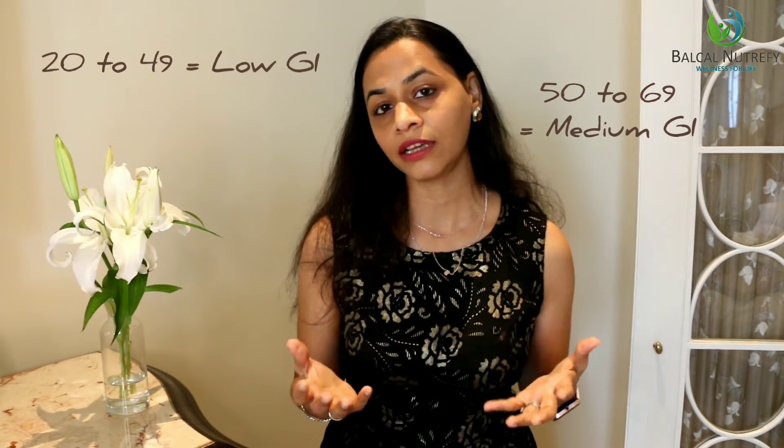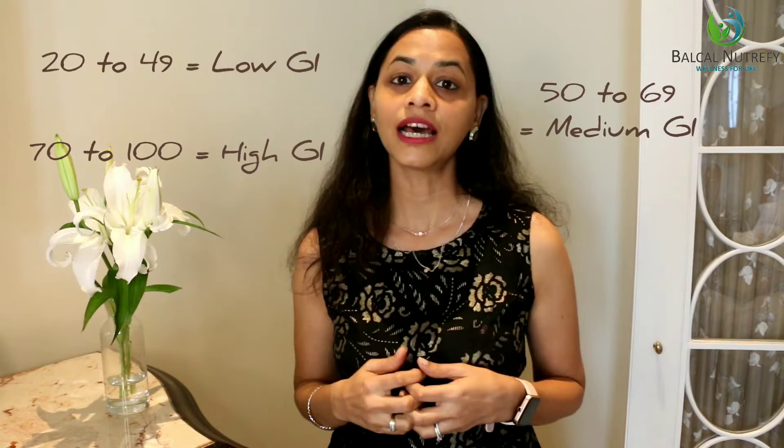Foods with different glycemic index values are predominantly categorized into three categories. Foods with a GI between 20 to 49 are called low GI foods. Foods with a GI between 50 to 69 are called medium GI foods. And foods with a GI of 70 to 100 are called high glycemic index foods, meaning they raise our blood sugar levels faster and higher.